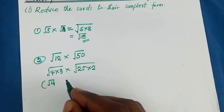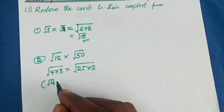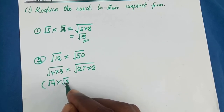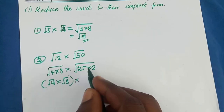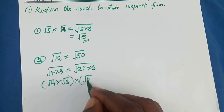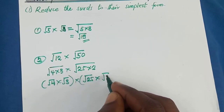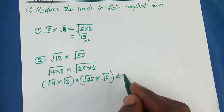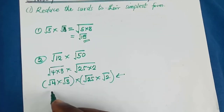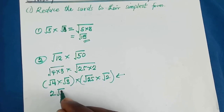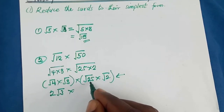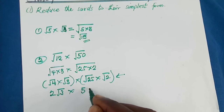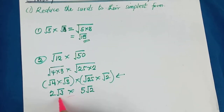So we have square root of 4 times square root of 3, times square root of 25 times square root of 2. Square root of 4 is 2, square root of 25 is 5, and we bring along the root 2. Now this is in the simplest form and we can go ahead and multiply.